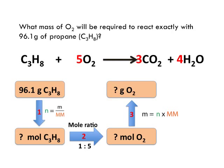To go over that again: we've been given a mass in grams. We turn that into moles by dividing the mass by the molar mass — so we need the molar mass of propane from the periodic table, giving us moles of propane. We know the molar ratio: one mole of propane reacts with exactly five moles of oxygen. So knowing moles of propane lets us work out moles of oxygen. Then we multiply the moles of oxygen by the molar mass of oxygen gas to get the mass of oxygen gas. Those are the three steps.